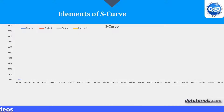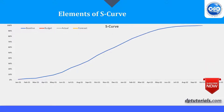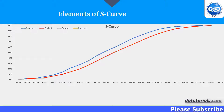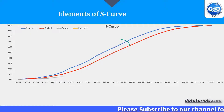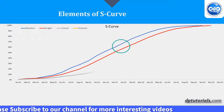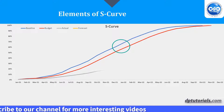As more progress is made, the growth accelerates rapidly, creating that upward slope that forms the middle part of the S. This point of maximum growth is called the point of inflection. During this period, project team members are working heavily on the project and many of the major costs are incurred.